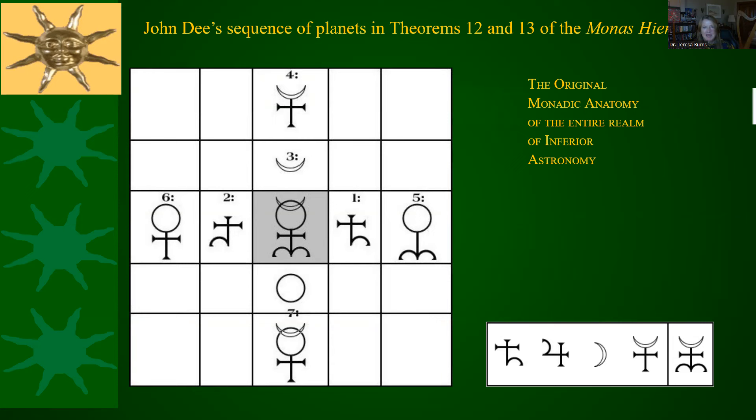The idea in astronomy of inferior astronomy is to explain an epicycle — it's used to calculate retrograde motion, and it's only used for Venus and Mercury, which we now know, and I think Dee knew just as well, are closer to the Sun than Earth. Mathematically, you calculate an epicycle the same way whether you are looking at things heliocentrically or geocentrically, to understand the retrograde motion of Venus and Mercury. It has nothing to do with Saturn, Jupiter, or Mars.